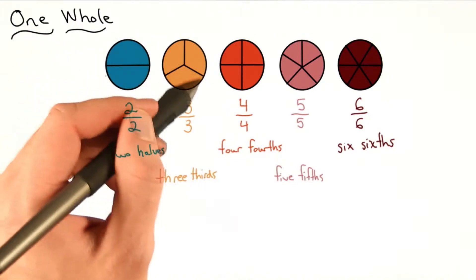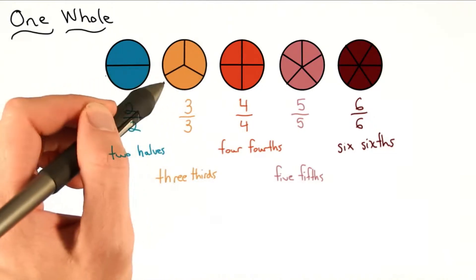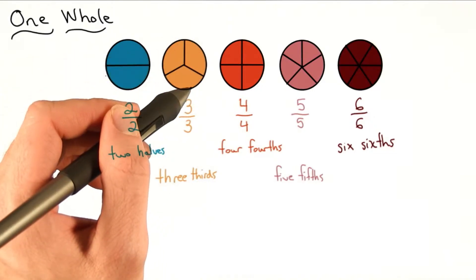Here I have 1 third of the circle, 2 thirds of the circle, and all together would be 3 thirds of the circle.